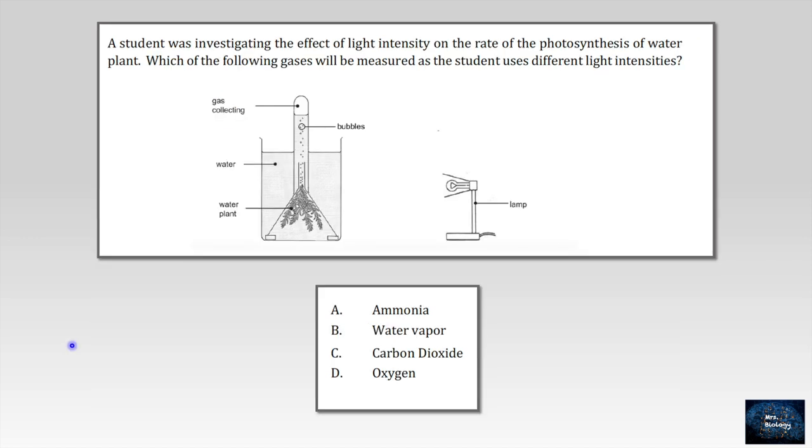This question is talking about photosynthesis process. A student was investigating the effect of light intensity on the rate of photosynthesis of water plant. Which of the following gases will be measured as the student uses different light intensities? Listen, this is talking about the basics of photosynthesis. And we all know that photosynthesis will consume carbon dioxide to produce glucose and to release oxygen. So what the student wants to measure is oxygen gas. The right choice is D.